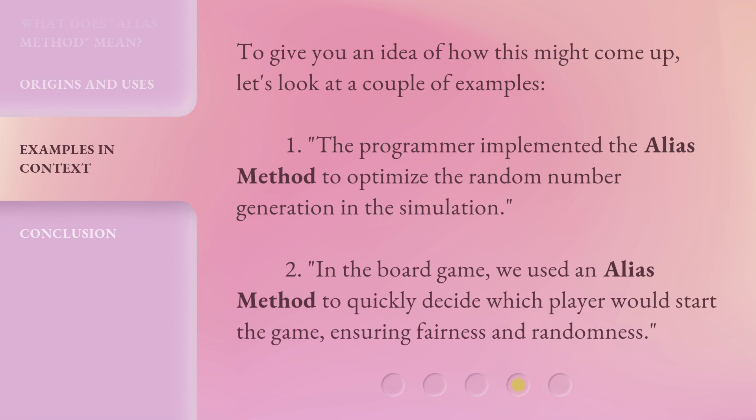To give you an idea of how this might come up, let's look at a couple of examples. One: the programmer implemented the alias method to optimize the random number generation in the simulation. Two: in the board game, we used an alias method to quickly decide which player would start the game, ensuring fairness and randomness.